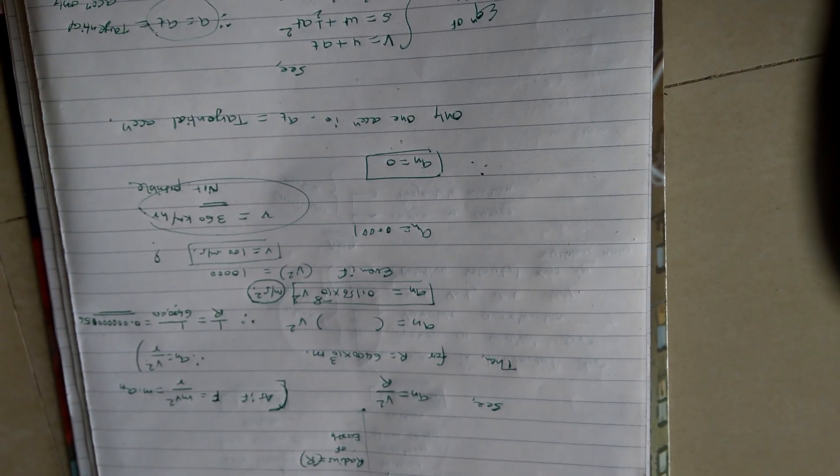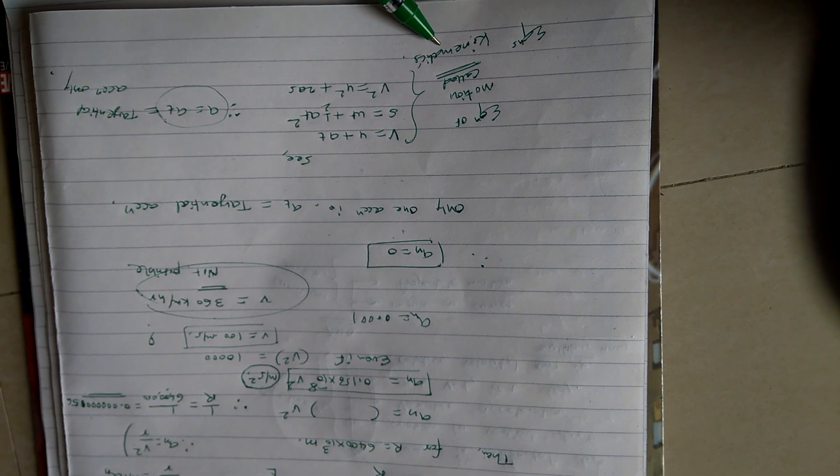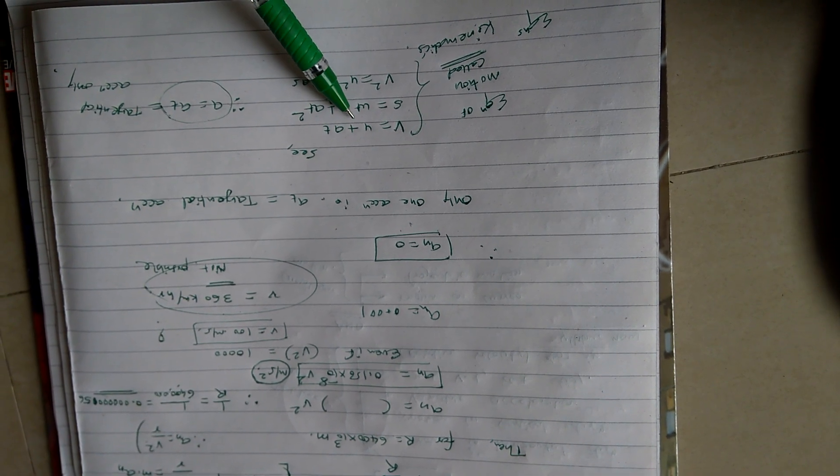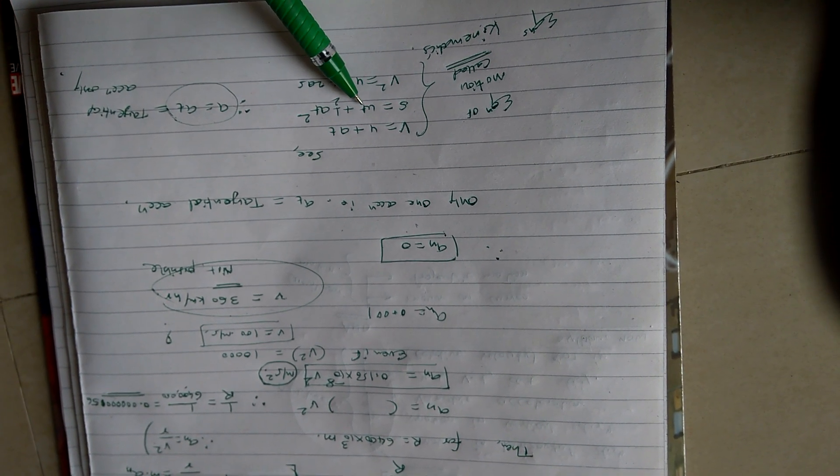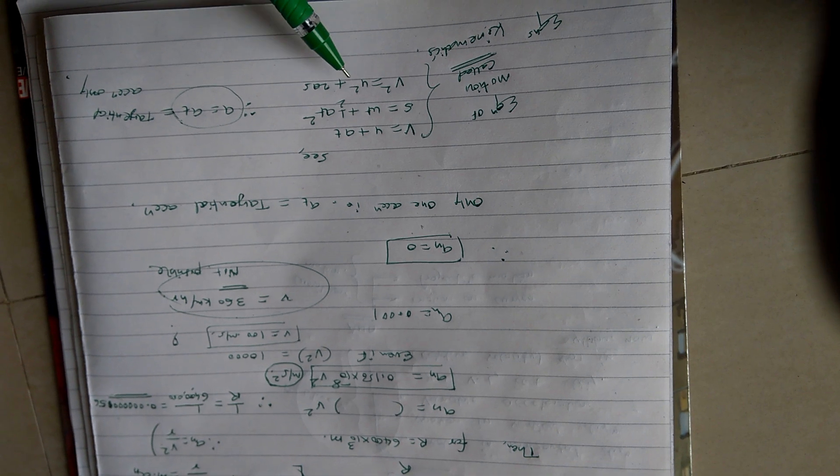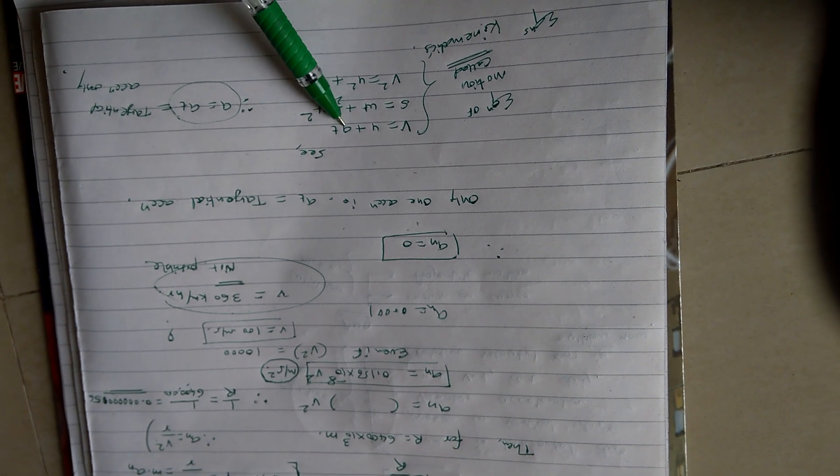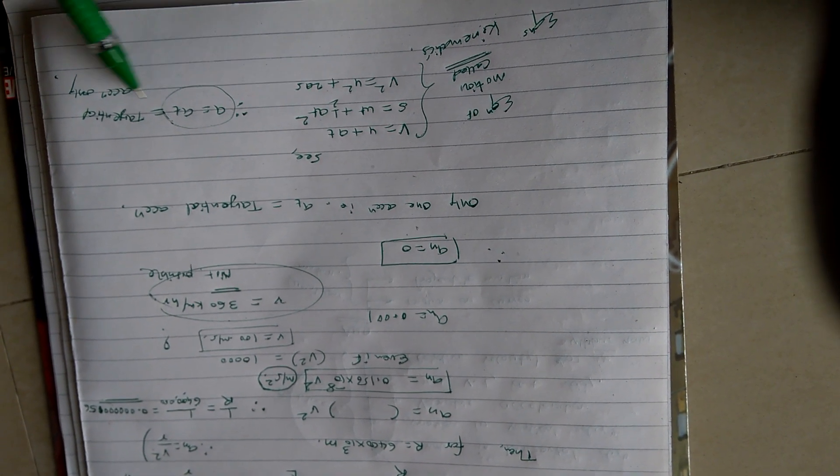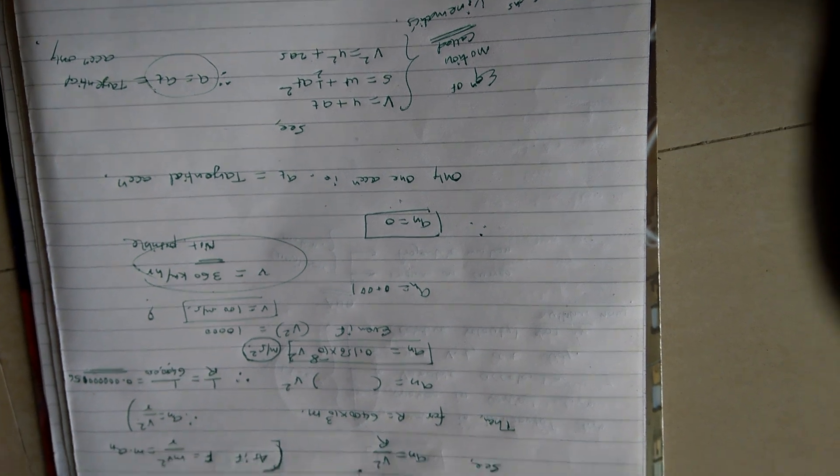If I ask you equations of motion, that is equations of kinematics, you immediately say v is u plus at, s is ut plus half at squared, and v squared is u squared plus twice as. Remember here all a are the tangential accelerations.